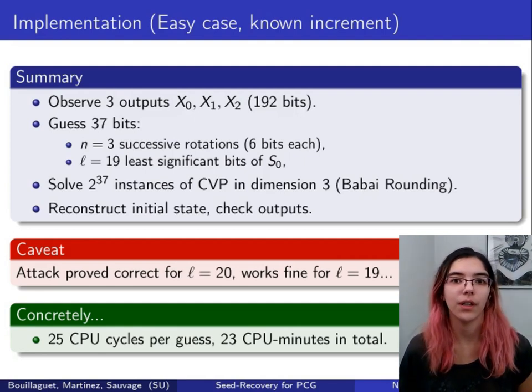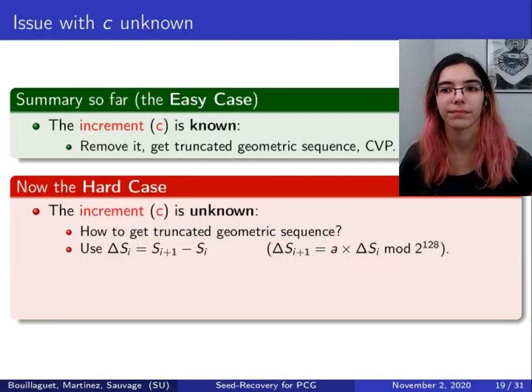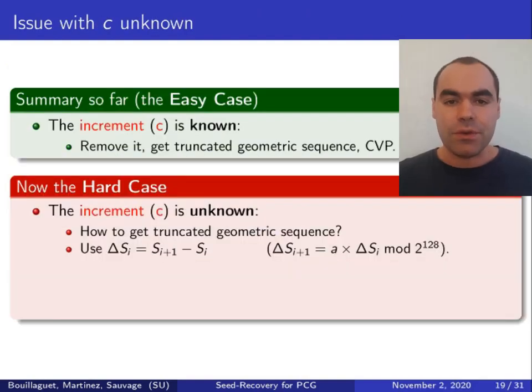Now let's move on to the hard case when the increment was unknown. The basic strategy was to remove it, get a truncated geometric sequence, then reconstruct the missing bits using lattice techniques. Now in the hard case, where the increment is unknown because it's part of the seed, that's the default situation in NumPy.